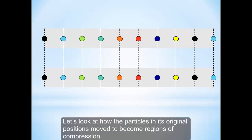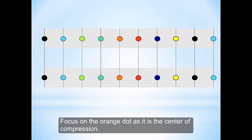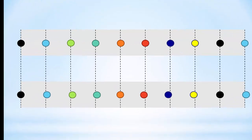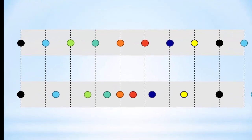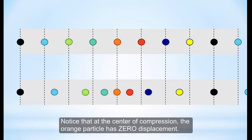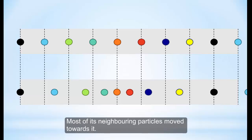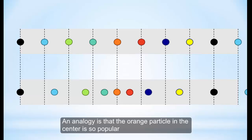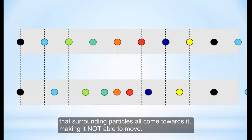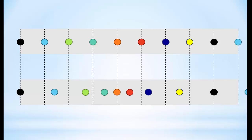Now let's look at how the particles in their original positions move to become regions of compression. Notice that at the center of compression, the orange particle has zero displacement. Most of its neighboring particles actually move towards it. As an analogy, the orange particle in the center is so popular that the surrounding particles all come towards it, making it unable to move — so it forms a compression.